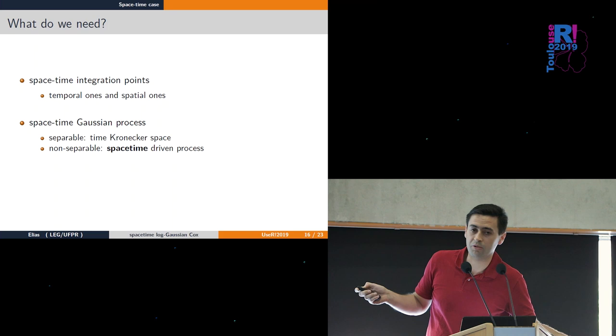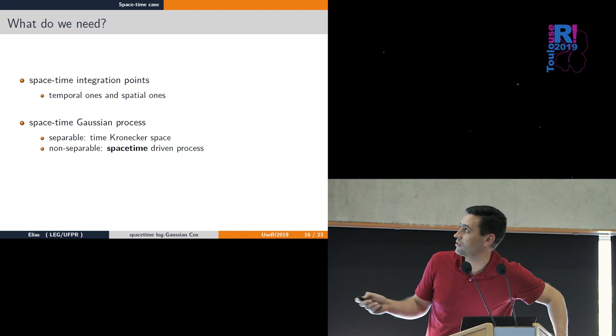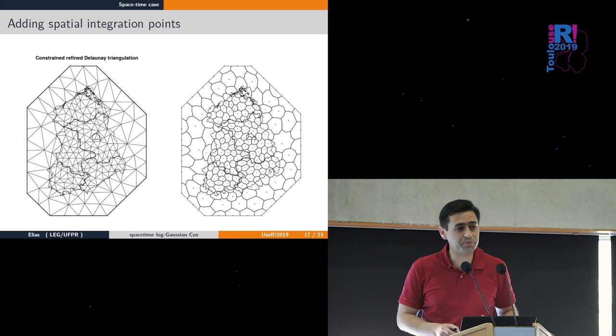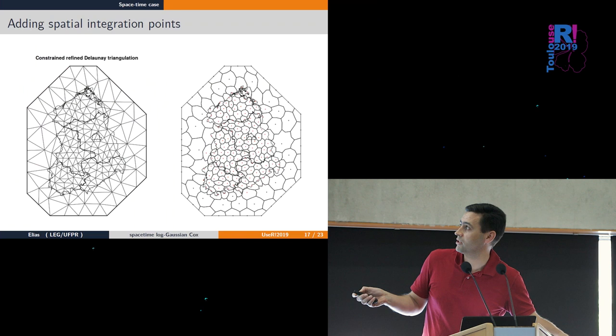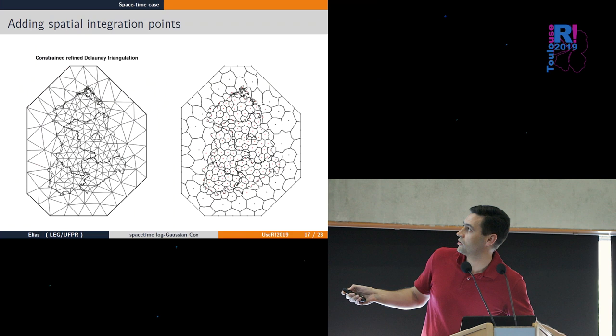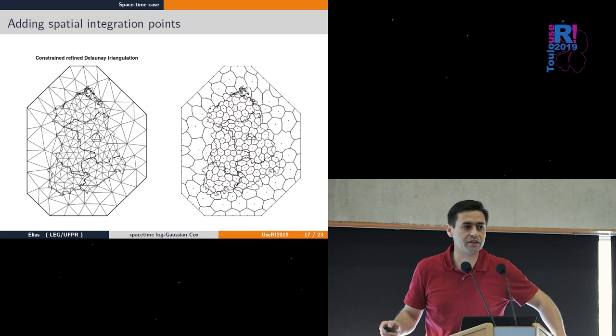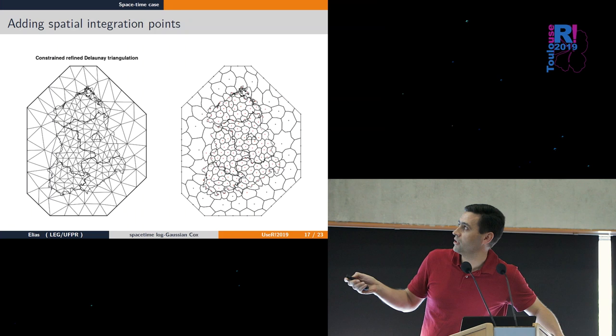There are two approaches: using models from time and space combined via Kronecker product, or a non-separable space-time model. Over space we have a triangulated domain called a mesh with triangles. Around each point we have the dual of triangles - the size of these polygons is the weight for integration.